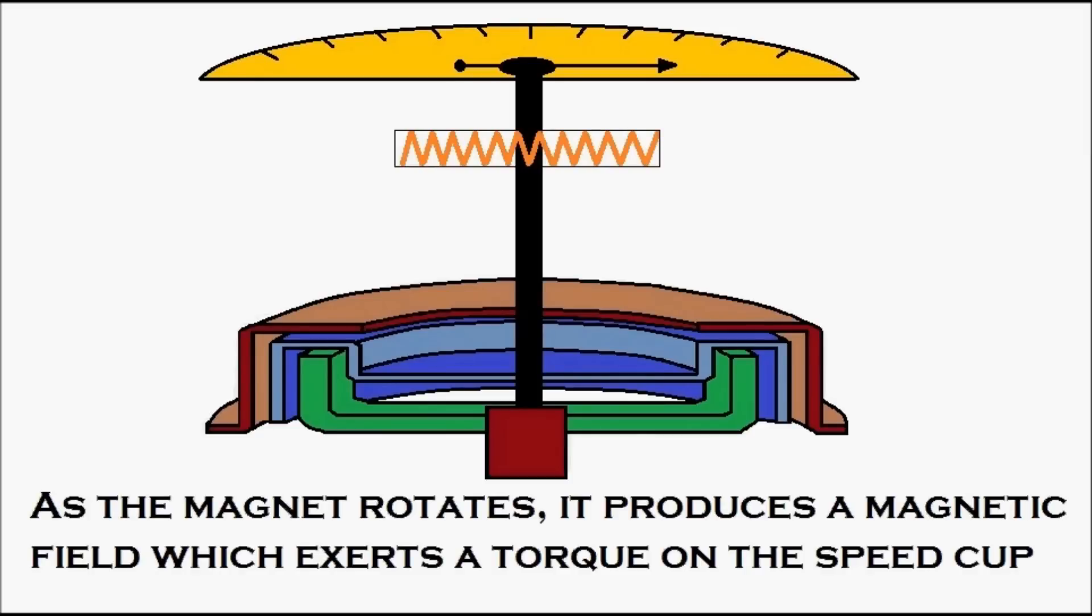As the magnet rotates, it produces a magnetic field which exerts a torque on the speed cup, which is in blue. Here you can see as the drive comes from the vehicle transmission, the magnet starts to rotate, and as it rotates, it creates a magnetic field around it.